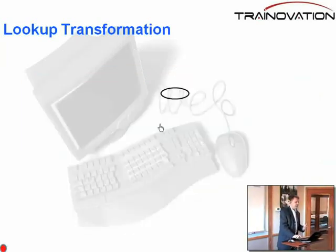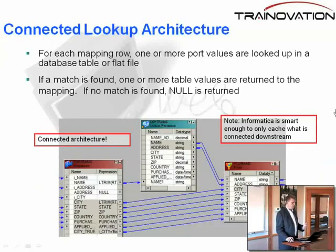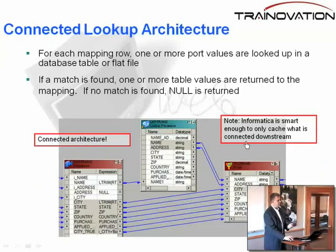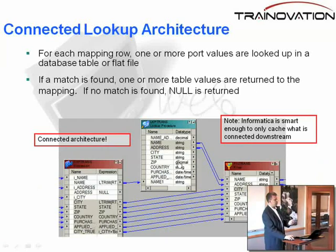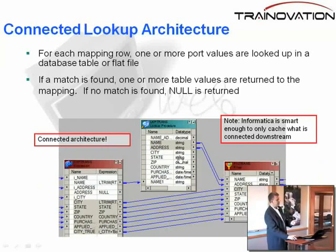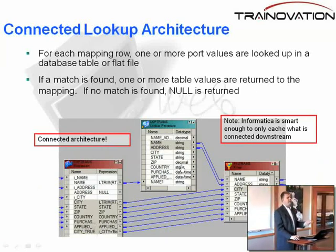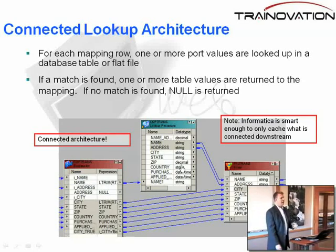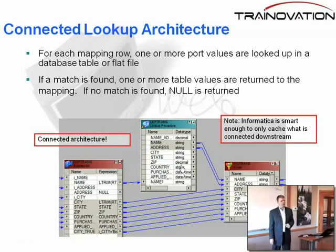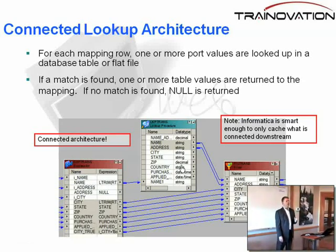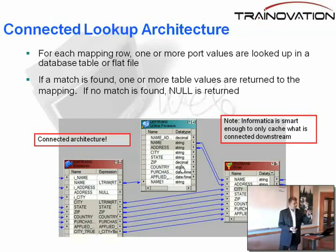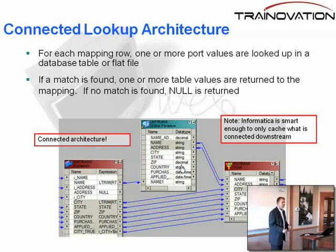I want to return to the previous slide for just a second. Here I have a lot of information: city, state, zip, country — and none of that is hooked up downstream, yet it's marked L in the lookup cache. Informatica, over the years, has optimized the lookup logic so that if it's connected and these fields are not attached, it will not put them in the cache.